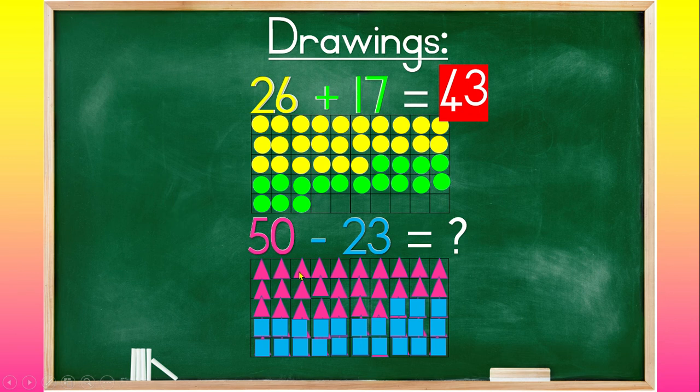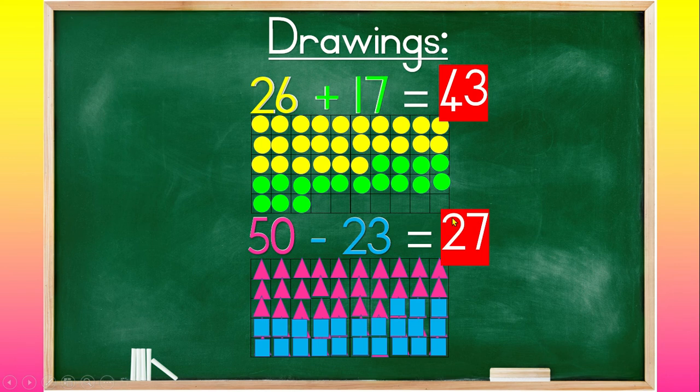Counting remaining triangles: 1, 2, 3, 4, 5, 6, 7, 8, 9, 10, 11, 12, 13, 14, 15, 16, 17, 18, 19, 20, 21, 22, 23, 24, 25, 26, 27. So 50 minus 23 equals 27.